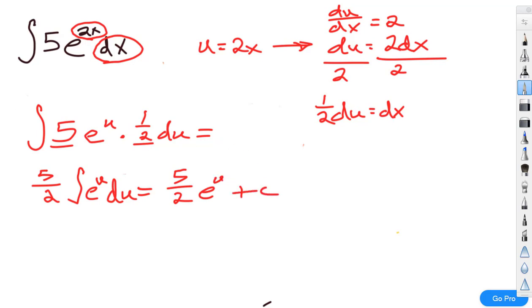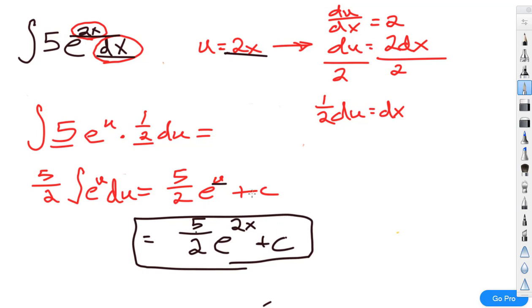Now, it's worth remembering that when we were asked to evaluate this integral, it's in terms of x and not u. So we want to wrap this up by rewriting our answer not with u, but in terms of x. So our final answer will be 5 half e to the 2x plus c. That will be our final answer. And remember, we can check our answer by taking the derivative.